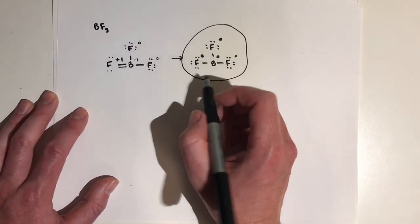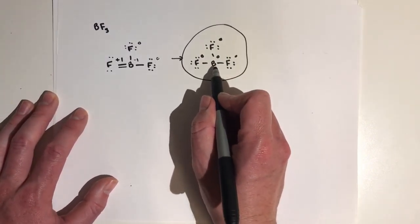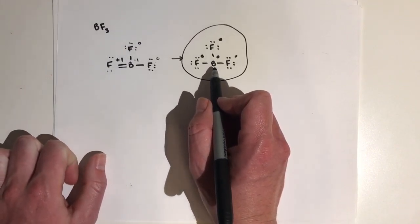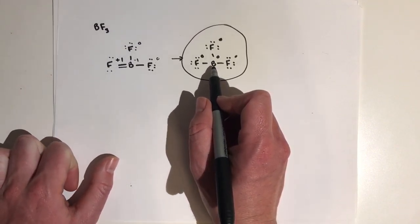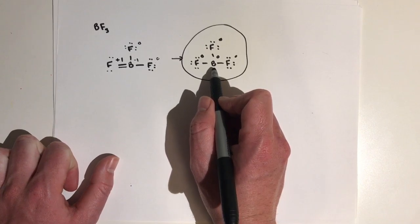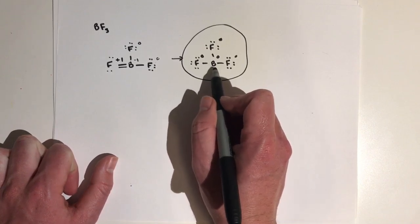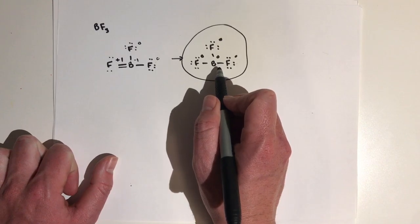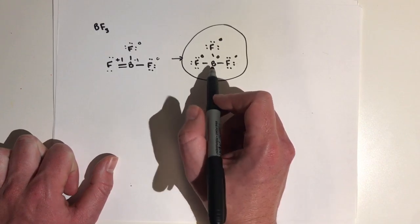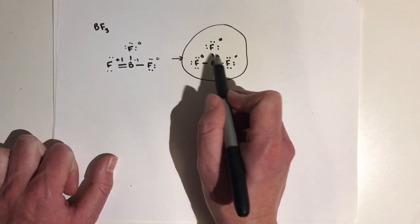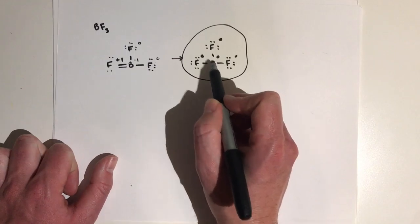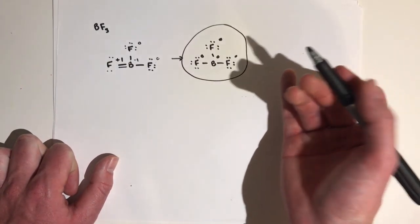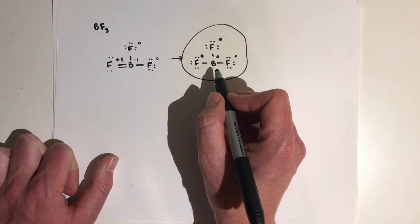But you'll notice that our boron doesn't have a complete octet. Sometimes, for smaller atoms — atoms that don't typically have very many valence electrons — they're okay not having a full octet. So when you're drawing these Lewis structures, it's okay if you don't have your full octet on these smaller atoms.